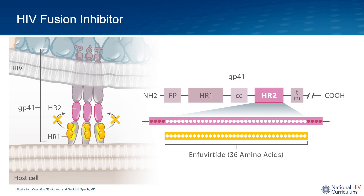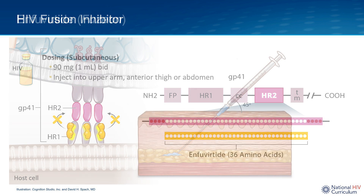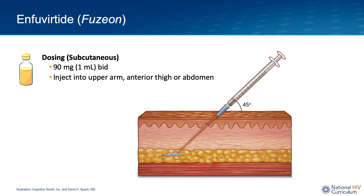Enfuvirtide thus prevents the fusion of the HIV and host cell membranes. It is the only available fusion inhibitor and, like most small synthetic amino acid peptide compounds, cannot be taken orally — it is administered as a twice-daily subcutaneous injection. This twice-daily injection requirement has been the primary rate-limiting step for the use of Enfuvirtide.